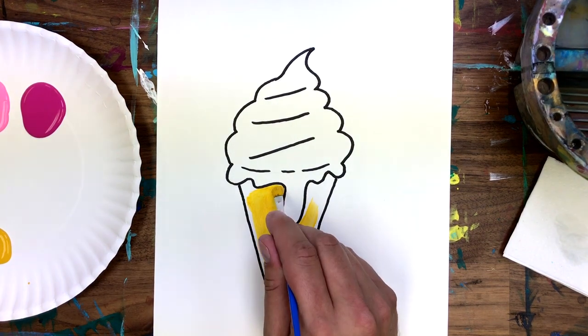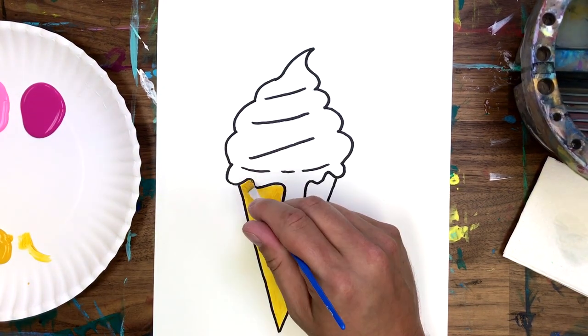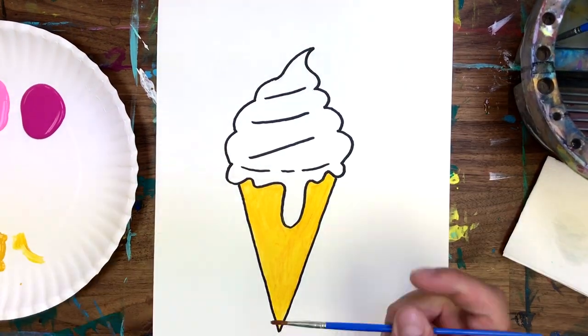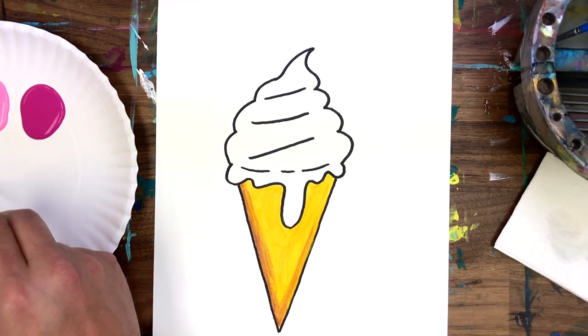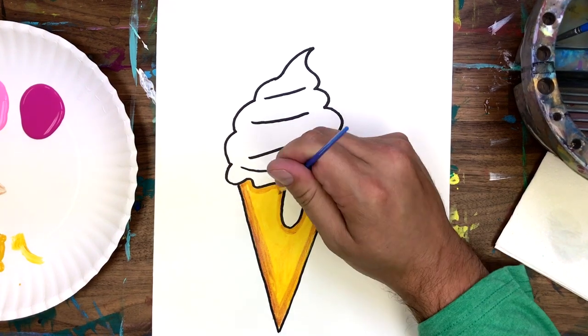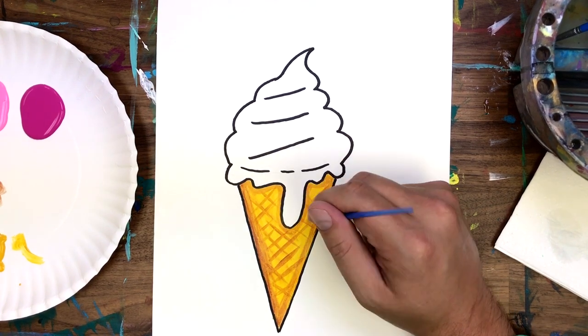I'm first going to fill in my cone yellow and then use brown to make an outline and crisscross marks. This will make it look like it's a waffle cone. Did you know waffle cones didn't exist until 1904? It was when an ice cream vendor ran out of cups and with the help of a waffle maker the next booth over came up with this delicious solution. So it looks like we're just about done with our cone.